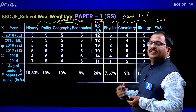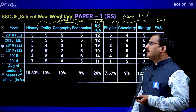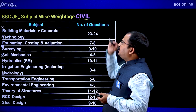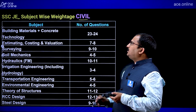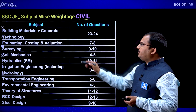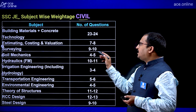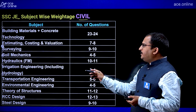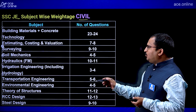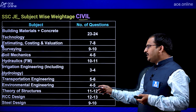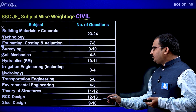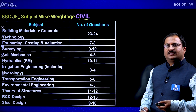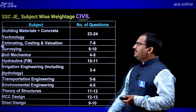For Civil Engineering weightage: Building Materials and Concrete Technology 23–24, Estimating Costing and Valuation 7–8, Surveying 9–10, Soil Mechanics 4–5, Hydraulics 10–11, Irrigation Engineering including Hydrology 3–4, Transportation 5–6, Environmental Engineering 4–5, Theory of Structures 11–12, RCC Design 12–13, and Steel Design 9–10 marks.